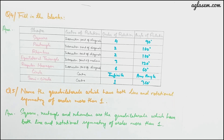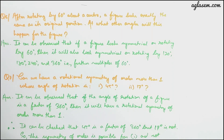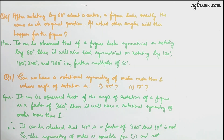Question 6: after rotating by 60 degrees about the center, a figure looks exactly the same as its original position. At what other angles will this happen? It can be observed that if a figure looks symmetrical on rotating by 60 degrees, it will also look symmetrical on rotating 120 degrees, 180 degrees, 240 degrees, and 360 degrees — that is, further multiples of 60 degrees.